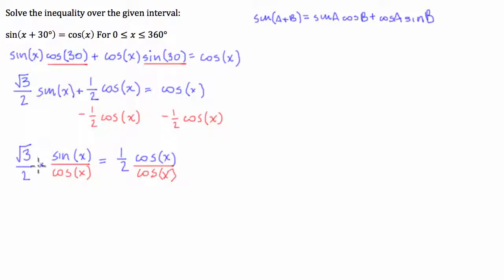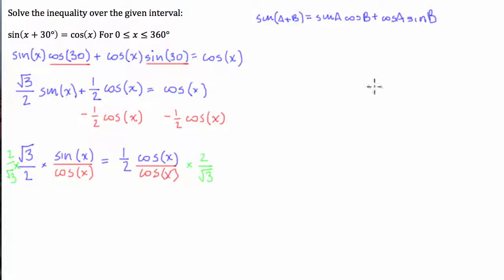I'm going to multiply both sides by 2 over root 3. So we have 2 over square root 3 times 2 over square root 3 on the left — these cancel out to form 1, and the other pair also cancels to form 1. We're left with sine x over cos x.